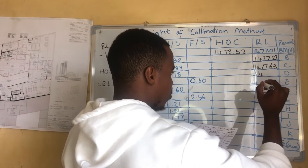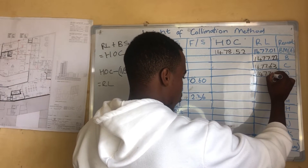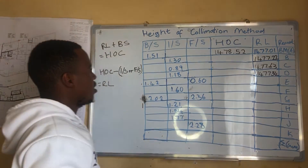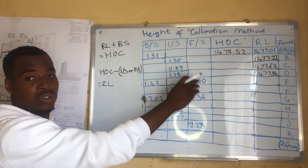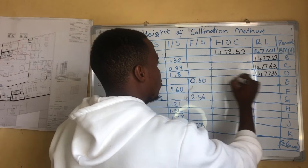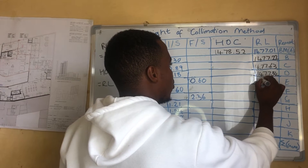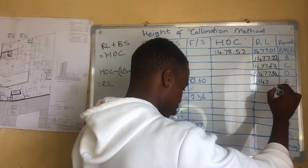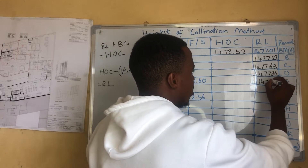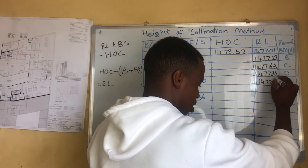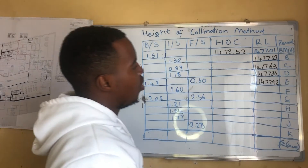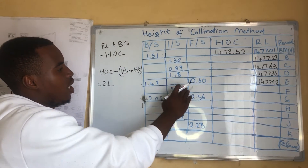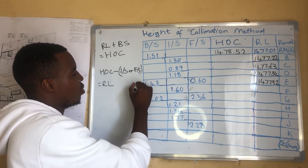For point D we get 1477.34. Again it is a foresight, so we do the same, and for the foresight we get 1477.92.